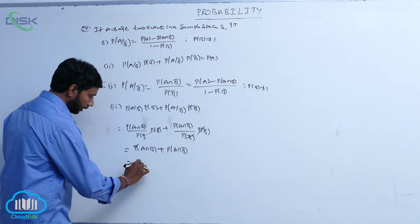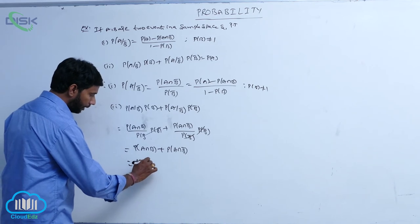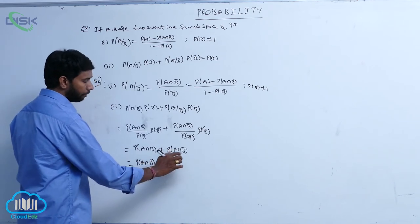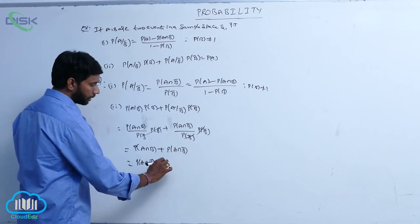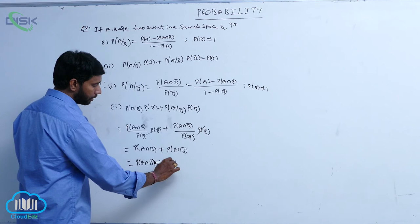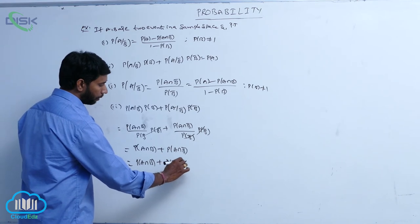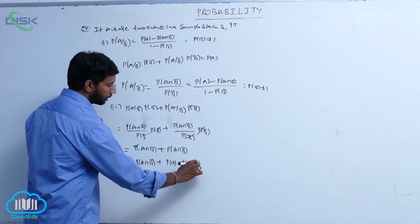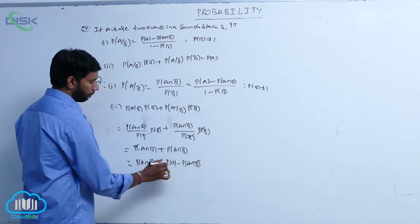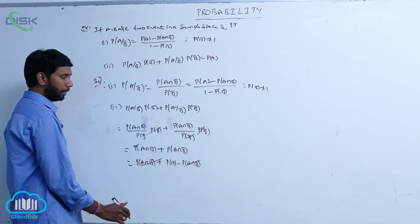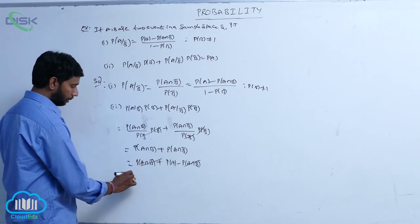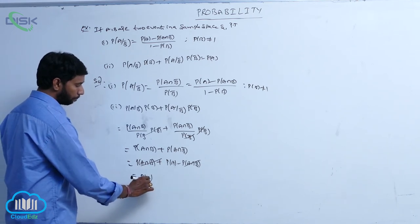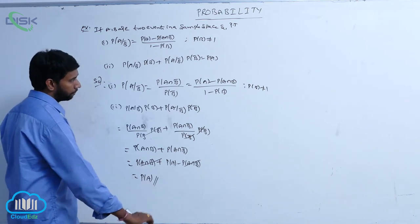This is equal to P of A intersection B, plus P of A intersection B bar, which is P of A minus P of A intersection B. Here, minus P of A intersection B and plus P of A intersection B cancel, and that is equal to P of A.